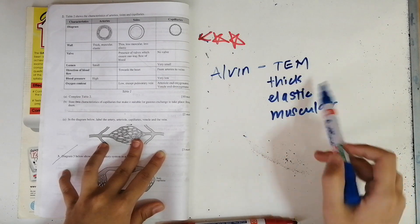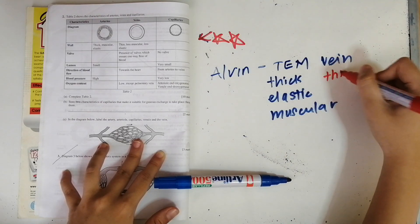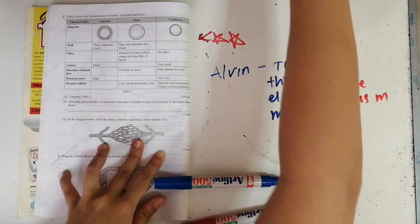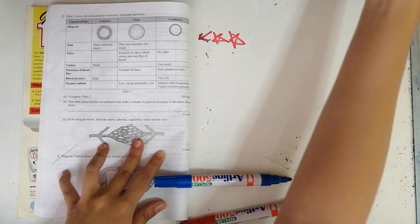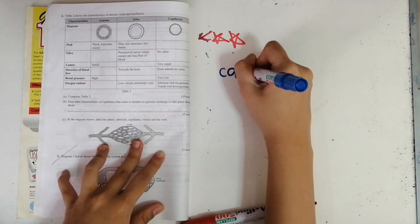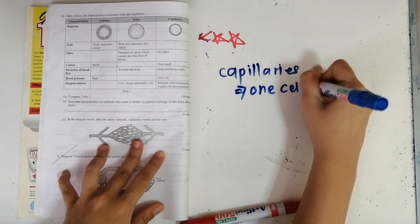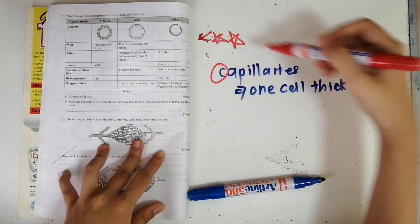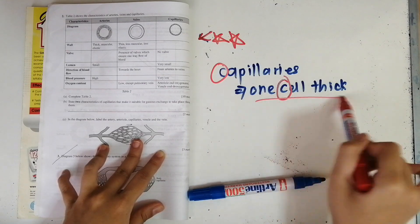For veins, it is just less — thin and less elastic and less muscular. Now what they're asking is the wall of the capillary. Capillaries are only one cell thick. How do you remember this? There's a C in capillaries and a C in cell, so when you see capillaries, think of cells — one cell thick.